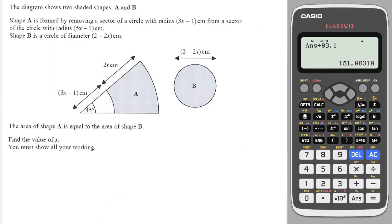Okay, here we have a very tricky question. So we have shape A is formed by removing a sector of a circle from another sector of a circle, as shown here. And shape B is a circle. And it says that shape A and shape B have the same area. So let's first work out the area of shape B.